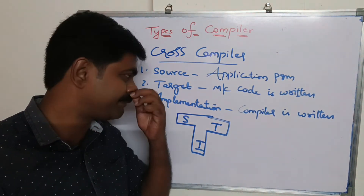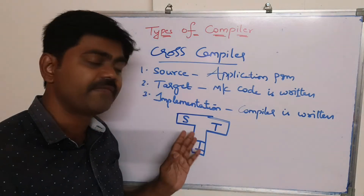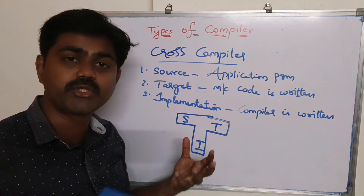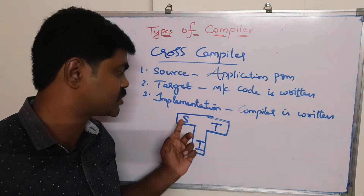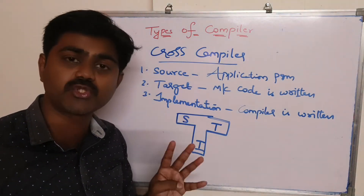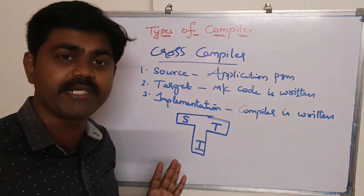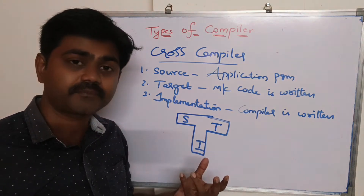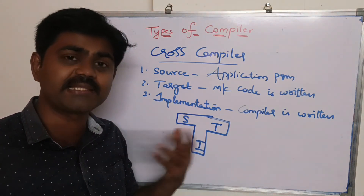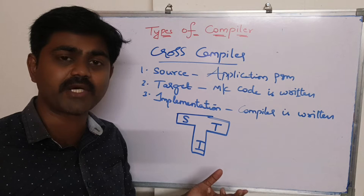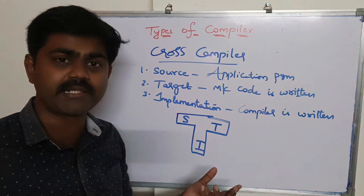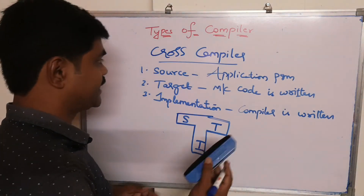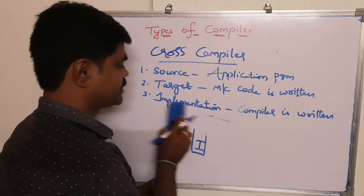A cross compiler is obtained whenever we combine two different compilers. Every compiler has a source, target, and implementation, and when combined there will be a result which is another compiler — we call it a cross compiler. Let's see an example for this.